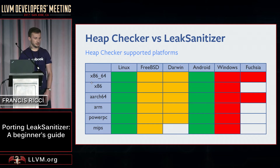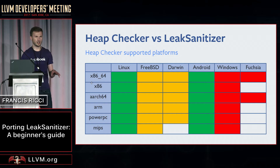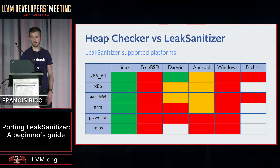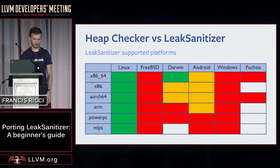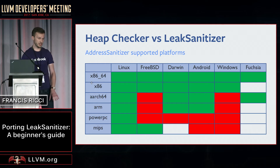However, a heap checker is supported on a lot of platforms. The green platforms are fully supported and the yellow ones work pretty much — you have to fiddle a little bit with your code base. On the other hand, leak sanitizer is not supported in very many places. The yellow platforms are close but need some bug fixes or small features. However, address sanitizer is supported on a lot of platforms — more than heap checker — and provides a lot of the basic functionality needed for leak sanitizer.